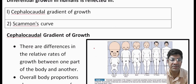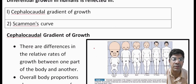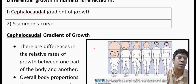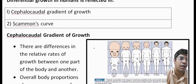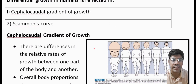The growth of the facial bones and structures is more pronounced during puberty, leading to changes in the shape and proportion of the face. Similarly, the growth of reproductive organs and secondary sexual characteristics occurs during adolescence. The concept of differential growth means that the timing and extent of growth in one body part or organ can differ from another. This non-uniform growth pattern is known as differential growth.